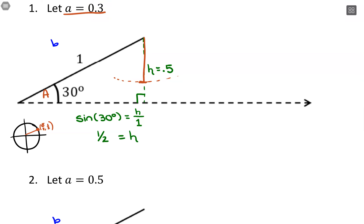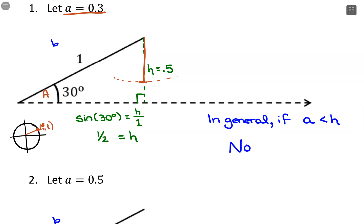When this happens — if you find the height of the triangle and that side length a is smaller than the height h — then there's no triangle. In general, if side length a is shorter than the height, there is no triangle. We would just say 'no solution' or 'no triangle' and move on from that problem.